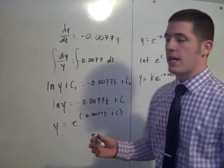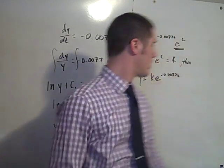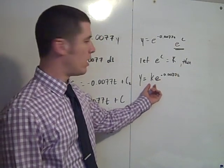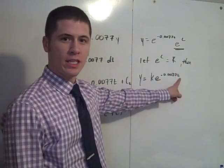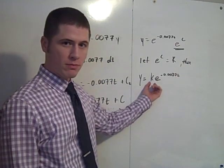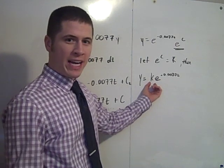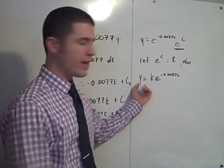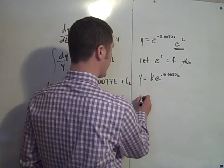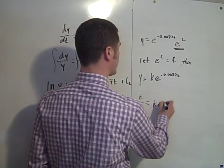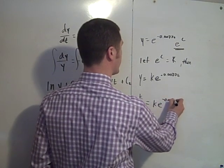And ultimately they ask you for the half-life. So what you should realize is that at time equals zero, when you plug in a zero for t, the initial amount is k. So we can find the half-life by plugging in k/2 for y. So if we let y equal k/2, then k/2 equals k times e to the negative 0.0077t.